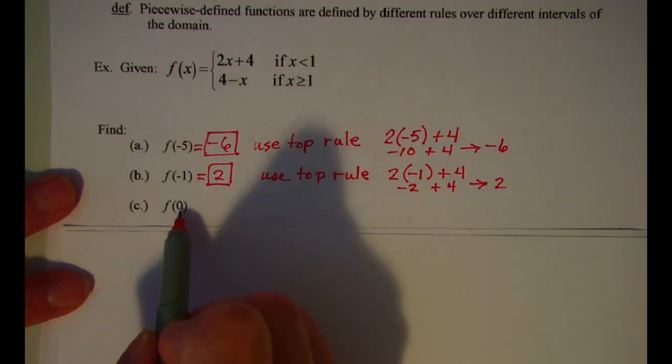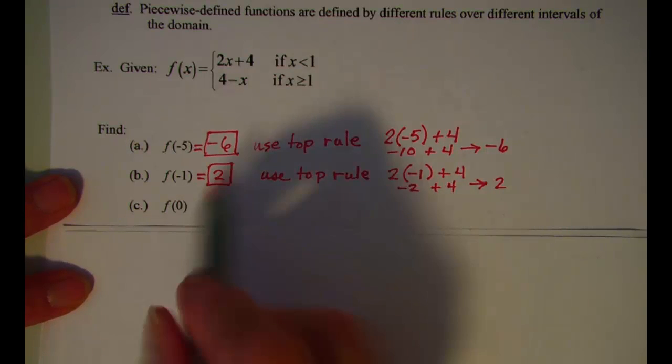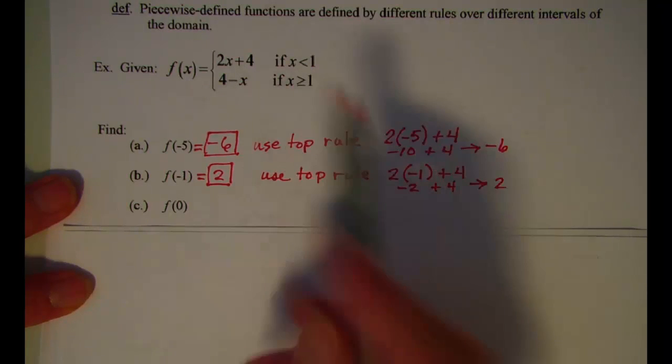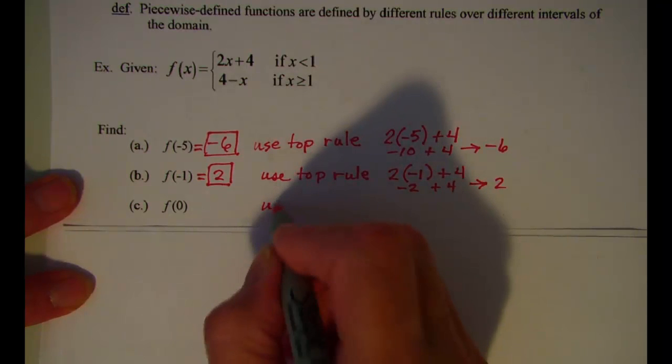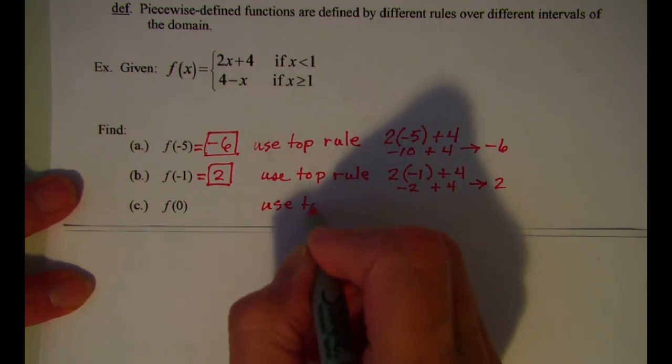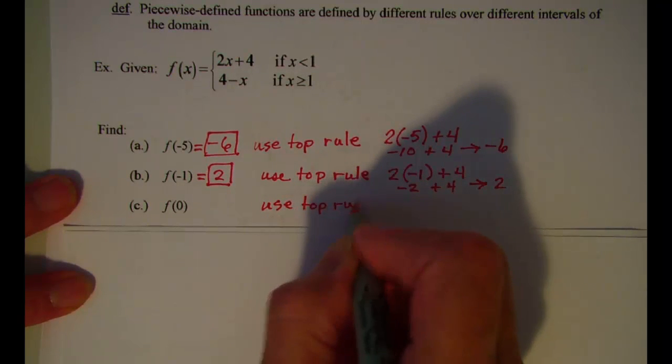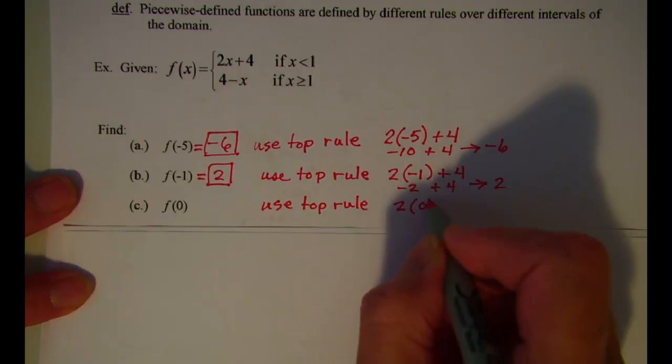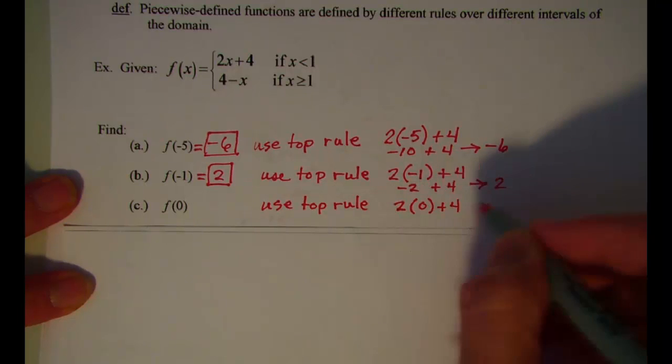This time x is 0. 0 is still to the left of 1 on the number line. 0 is still less than 1 and I'm still going to use the top rule. And I have 2 times 0 plus 4, which is 4.